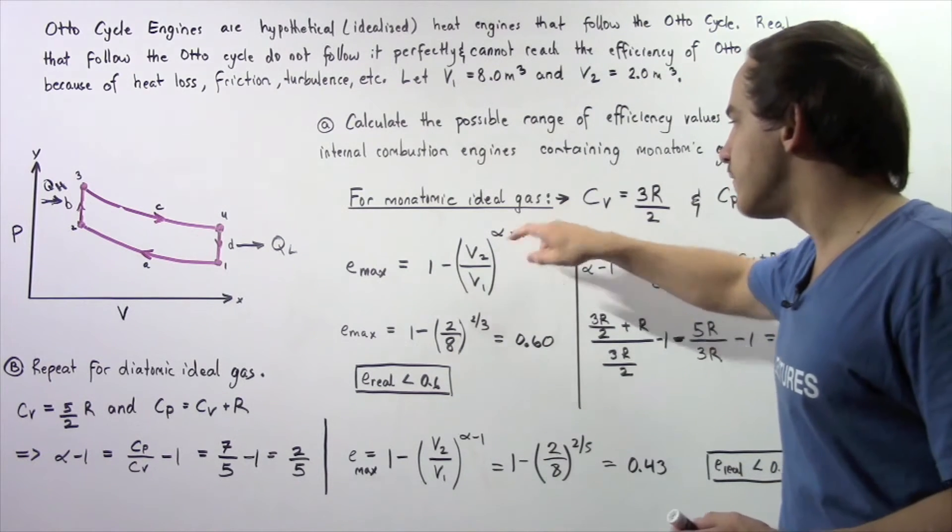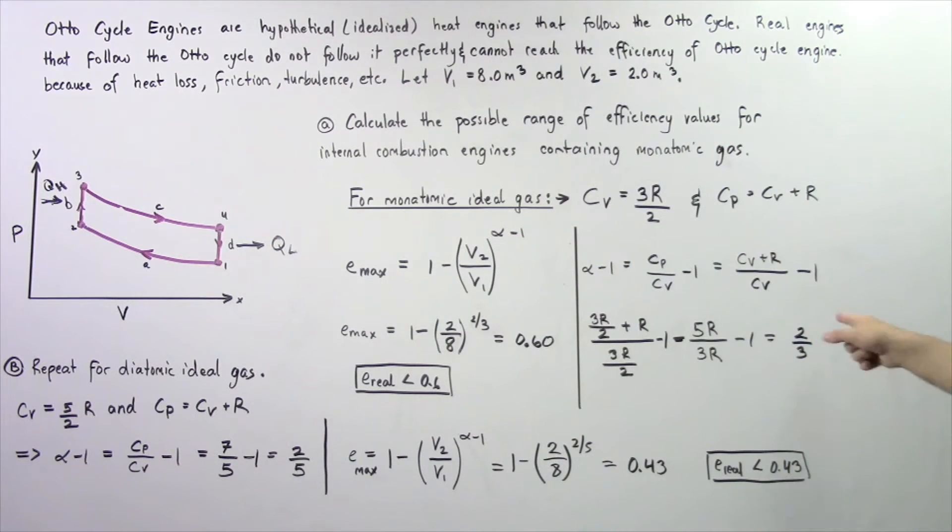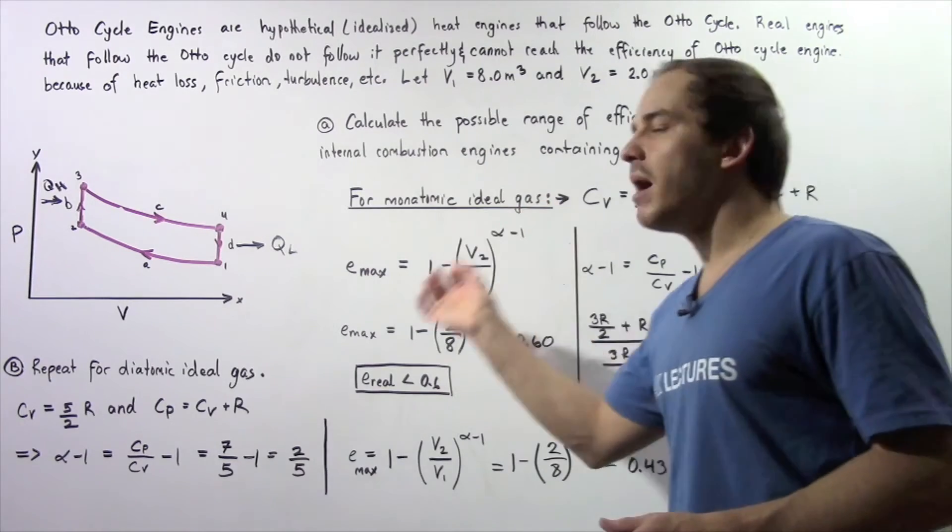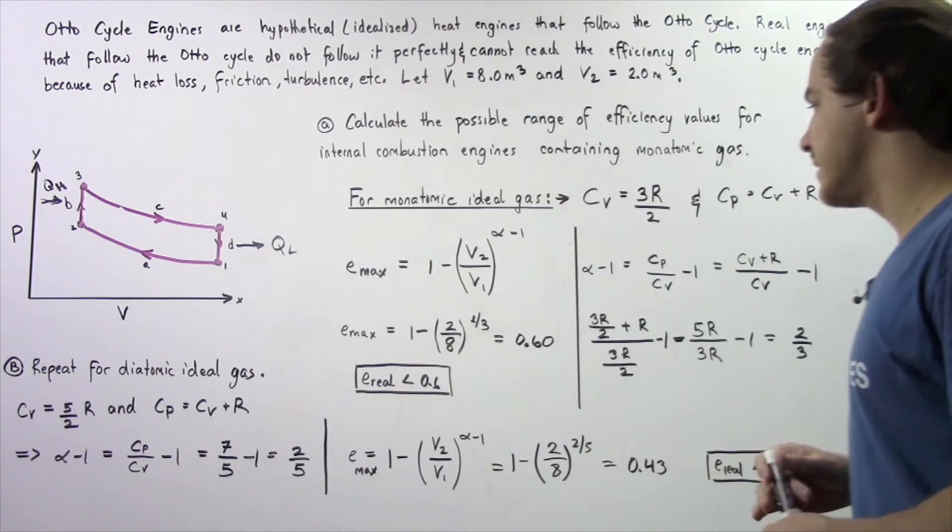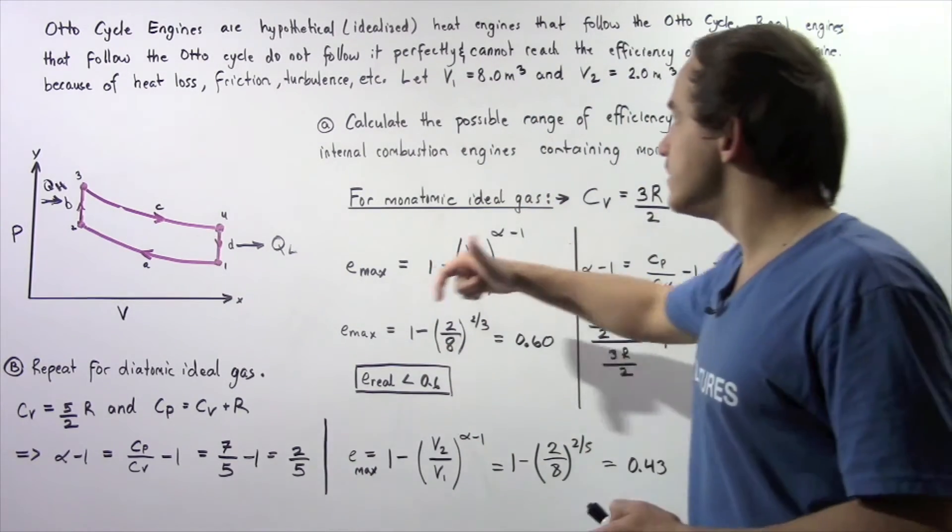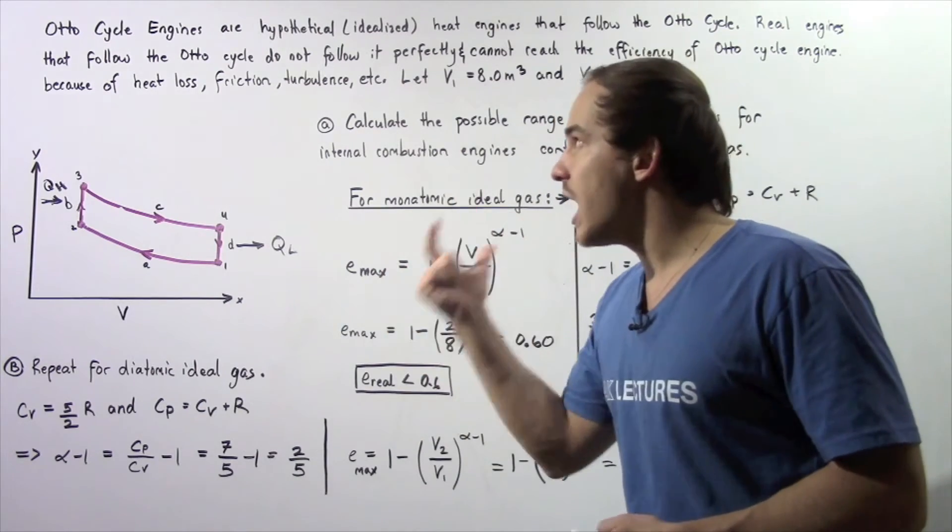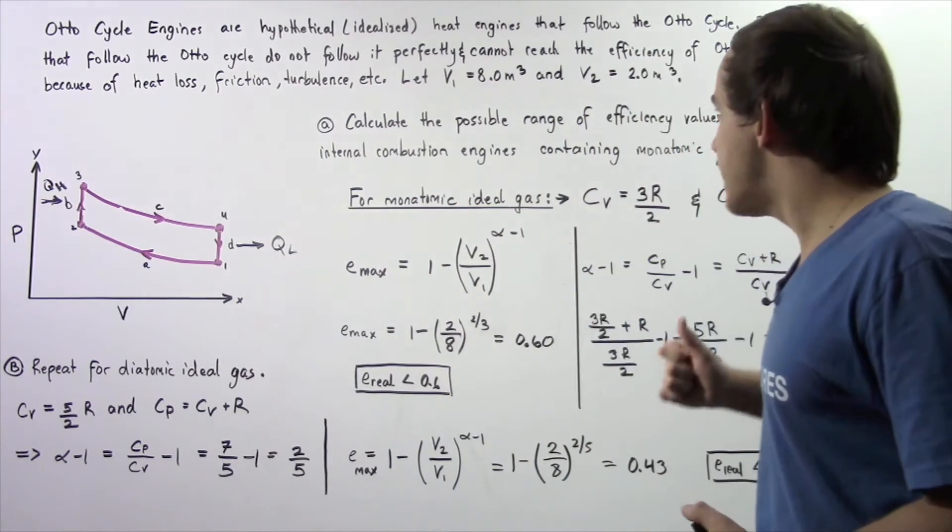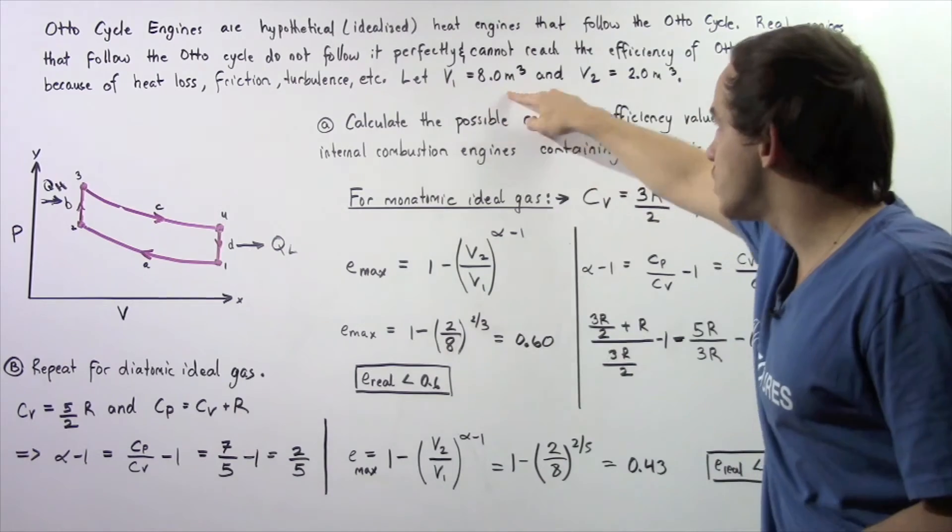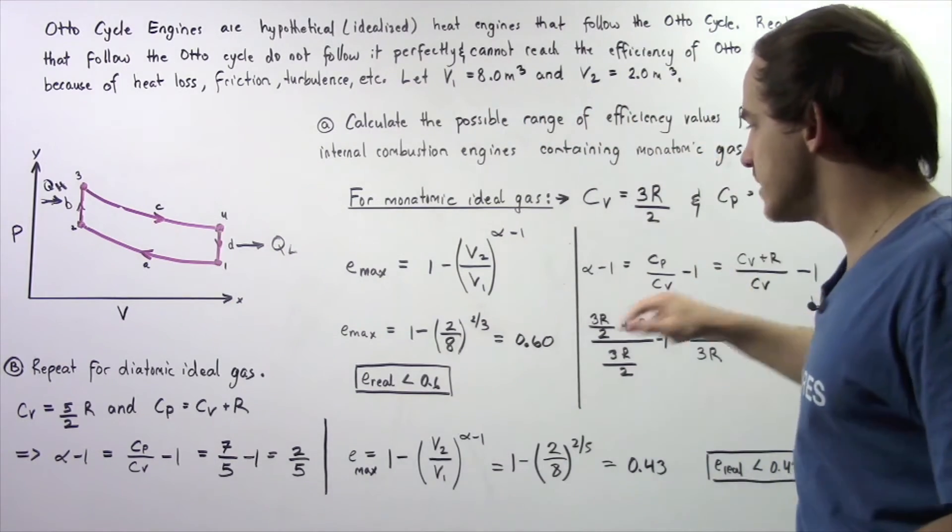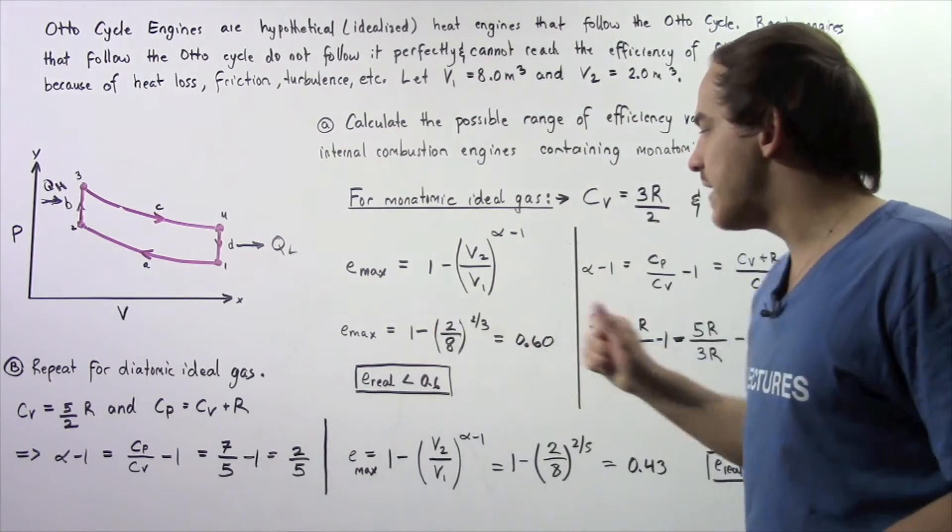So that implies that alpha minus 1 is equal to 2 thirds for a monatomic ideal gas. So that means the efficiency of the Otto cycle engine that has V1 equal to this and V2 equal to this is given by the following value.